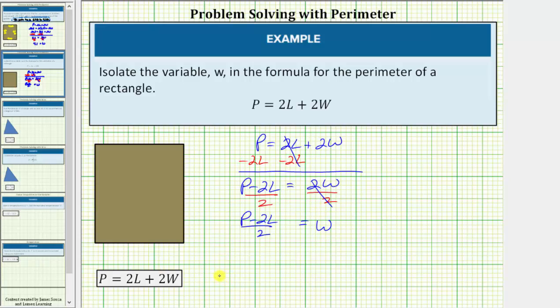So we can say that w is equal to the quantity p minus 2l divided by 2. But I also want to show how we can write this in a different form. If we know that w is equal to the quantity p minus 2l divided by 2, we can divide each term in the numerator by 2.